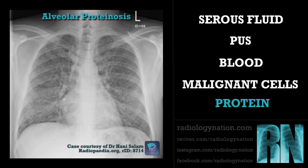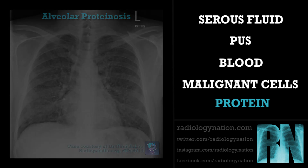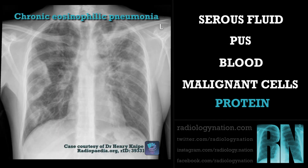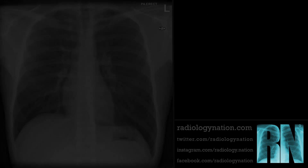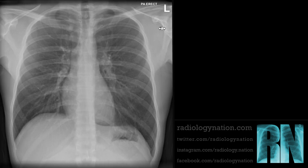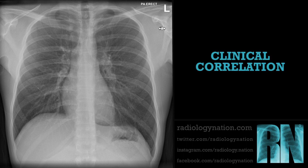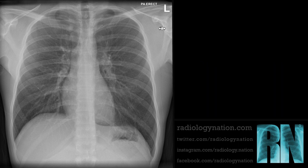In addition to the four common causes, pulmonary alveolar proteinosis and eosinophilic lung disease are rare causes of consolidation. As you can see from these examples, it is not always possible to identify the cause of the consolidation from its appearance alone. However, patients will usually present in different ways, which is why clinical correlation with the patient's symptoms is so important.